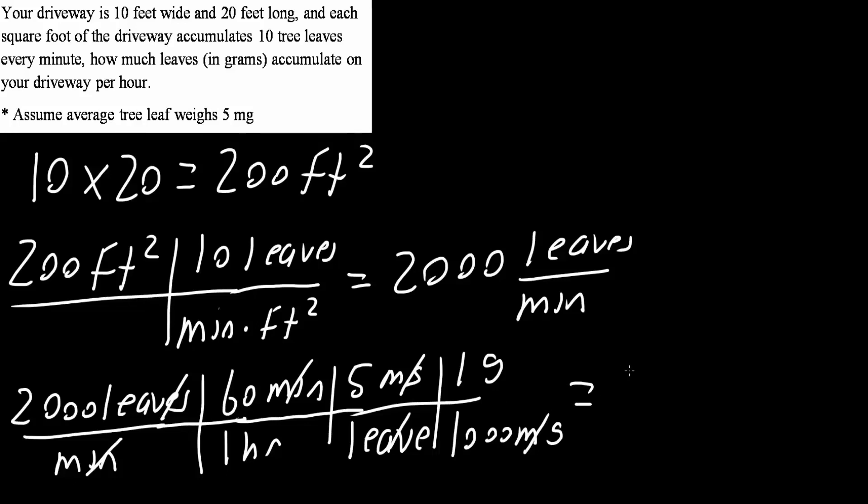If we multiply everything out we would get 600 grams per hour. You can say 600 grams of leaf per hour. And this is our final answer.